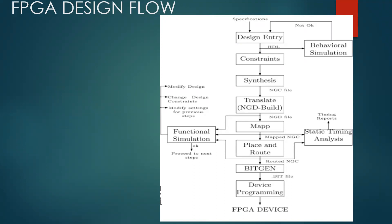First of all, whether the design is small or big, whatever the design is, it will have some specifications. Specifications means: what is the function it has to perform, what are the inputs and outputs, and the functionality — all these things. When we have all this given, we can have a design entry. Design entry is the first step. Here we try to capture the specification into our form, either as a schematic or using a hardware description language.